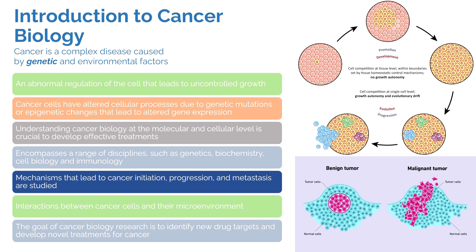Somatic mutations are those that occur in the course of life and do not occur in any reproductive cell, but rather in a normal tissue cell of the organism. Therefore, somatic mutations and somatic cancers do not pass down to offspring because they are not occurring inside the reproductive cells.